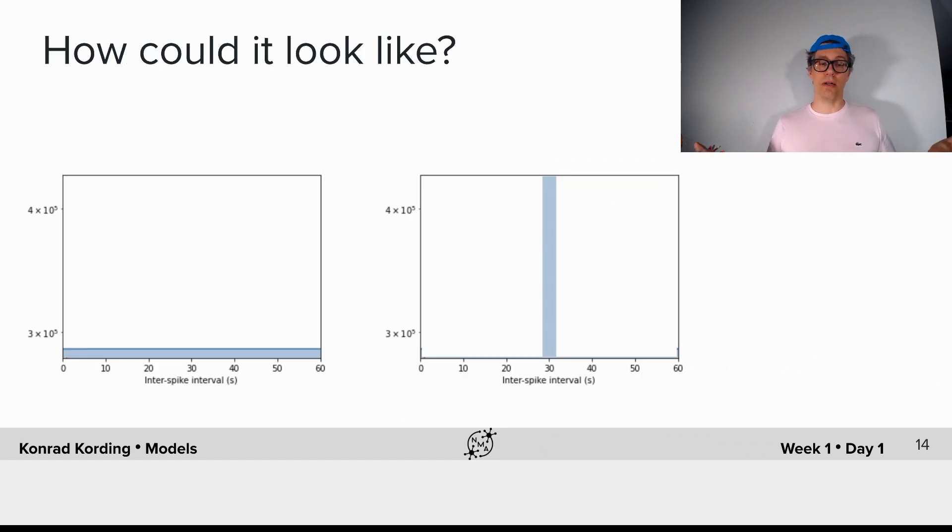So how could it look like? It could be that all inter-spike intervals are equally likely, up to some upper bound. Or it could be that all inter-spike intervals are very similar in size. We don't know at this time. The only way to find out is to look at the data, and the Steinmetz data is quite typical, as we will see.